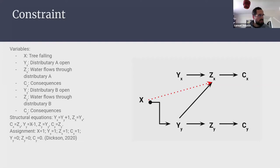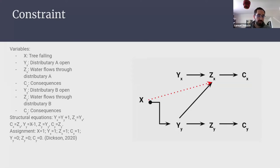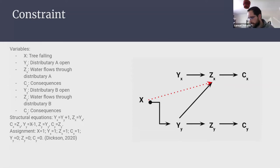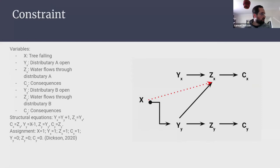As a result of it being impossible to flow down distributary B, and distributary A being open, water ends up flowing down distributary A. There's a counterfactual dependence from the tree falling to the water flowing down distributary A. Using interventionist approaches to causation — perform interventions on the model — it comes out that this is a causal relationship.